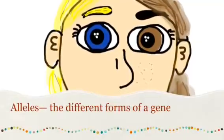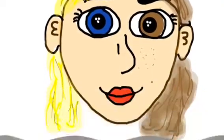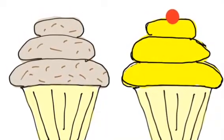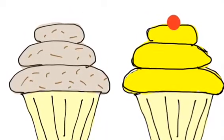Alleles are the different forms of a gene, whether it is for eye color or having freckles. Alleles are a bit like different flavors of cupcakes. You can have a lemon one or a chocolate one, but they are both still called cupcakes.